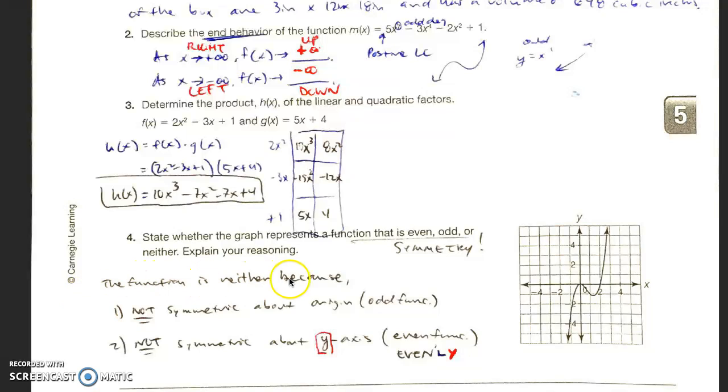So the function is neither because number 1, it's not symmetric about the origin. So this is the origin. Notice how you have kind of a slightly curved graph here and then you might have one over here, but notice here there's nothing and across the origin there's this bump right there. So it's not symmetrical about the origin. It's not symmetrical about the y-axis because you can't fold it. Remember my trick or my phrase is evenly. You want it to be symmetrical about the y-axis.